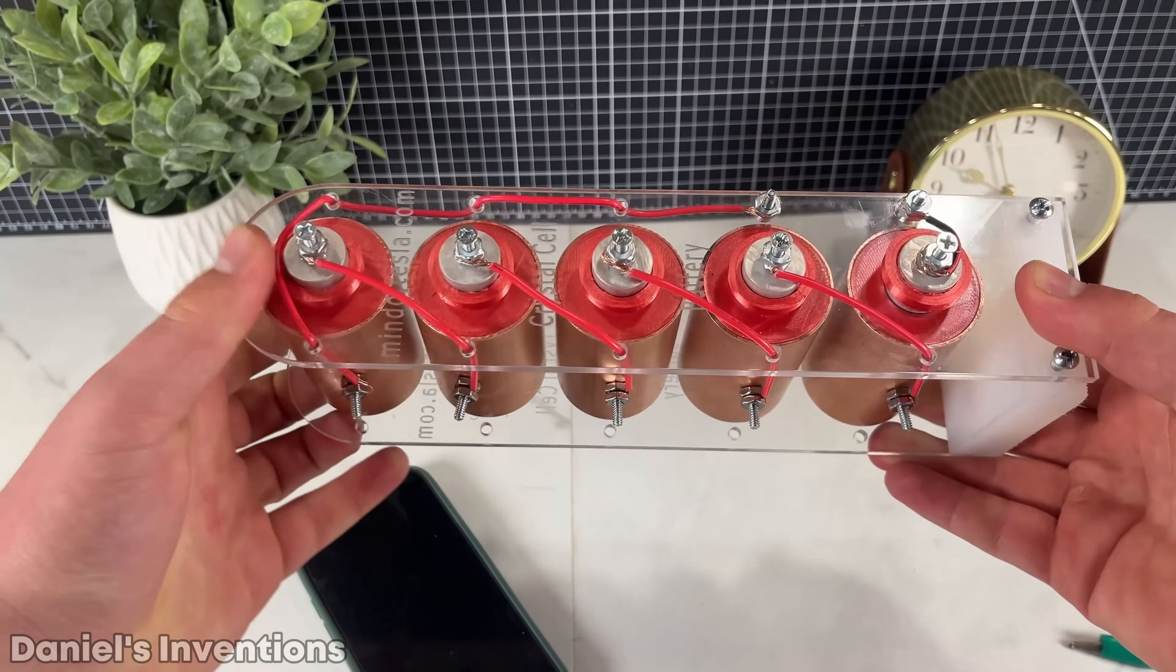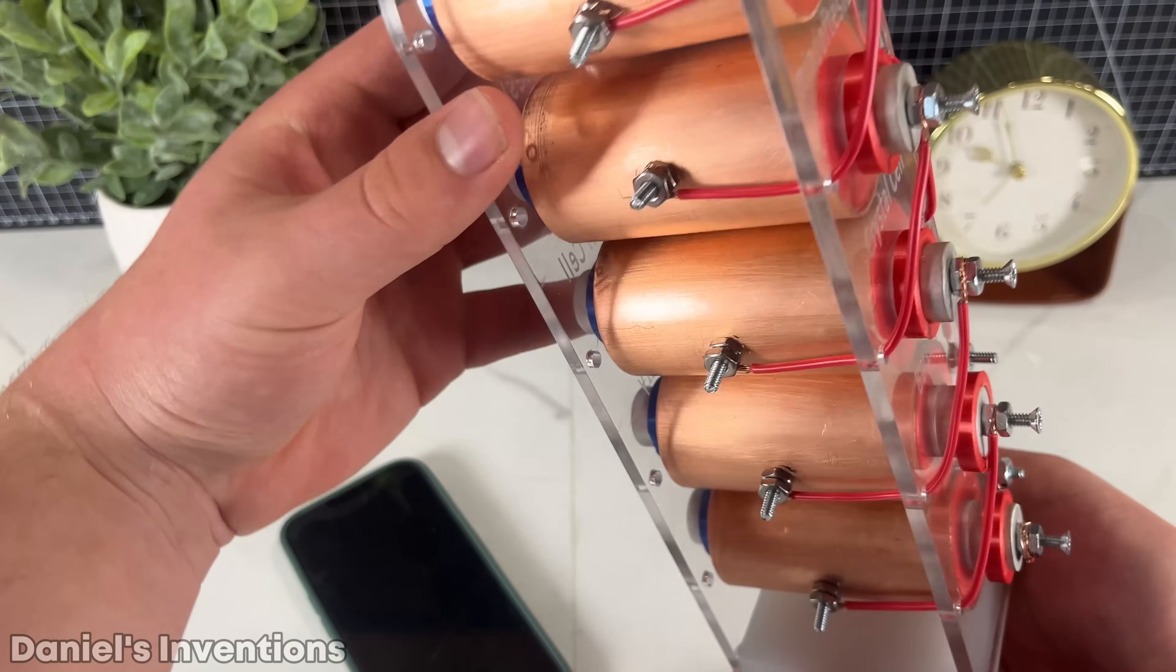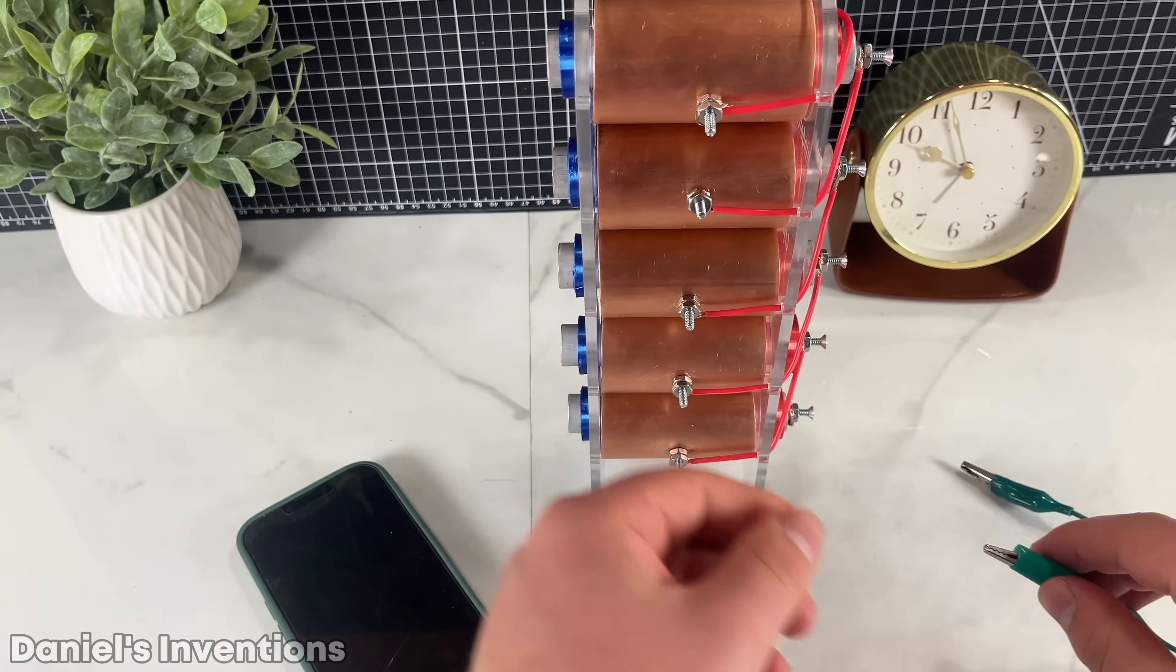The crystal cell batteries are finished, and since they generate more than 6 volts DC, I should be able to charge a cell phone, which requires only 5 volts and up.